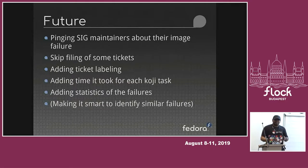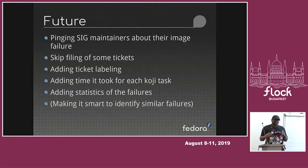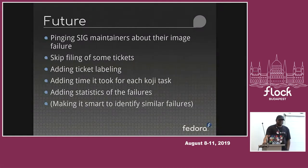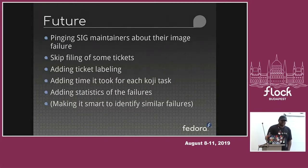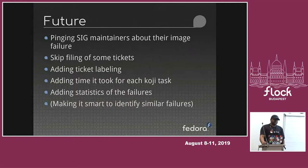We want to avoid creating more tickets but still ping the people on the same ticket we created earlier. We also want to add ticket labeling so it will be easier to figure out what compose failed — whether it's a Bodhi compose as part of updates, a nightly Rawhide compose, a Branched compose, or a Container compose — making it easier to figure out things when we look at them.